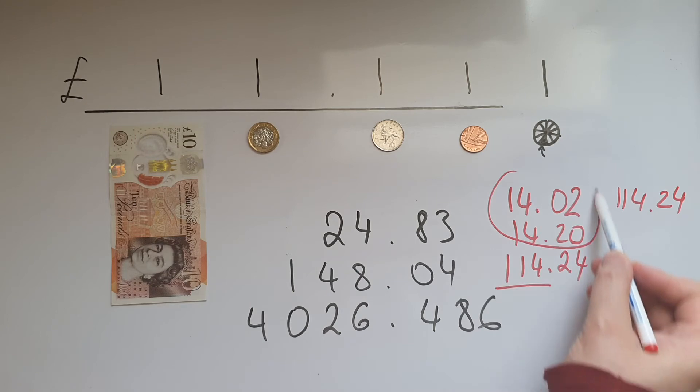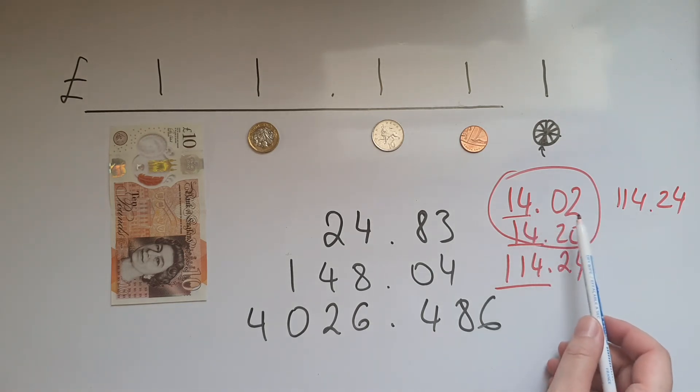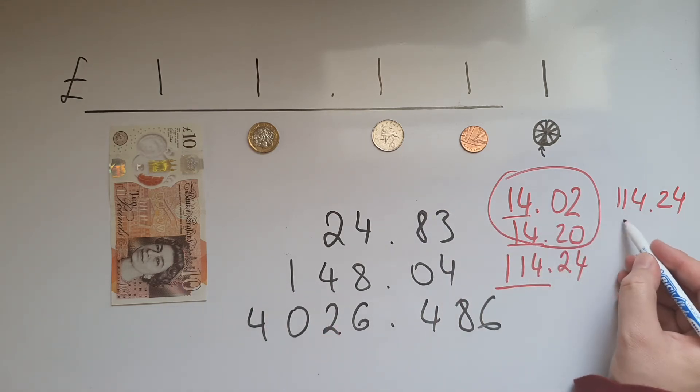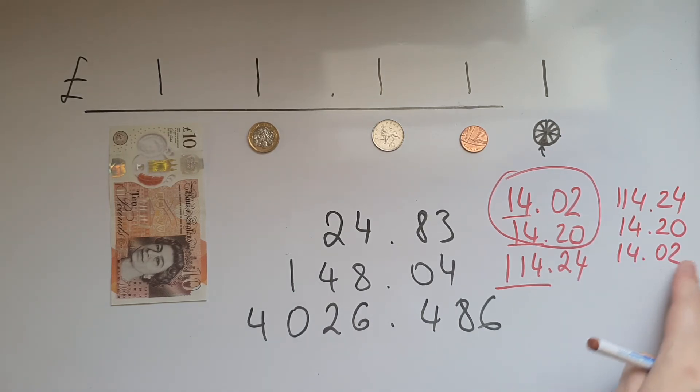Now comparing these two. The digits before the decimal point are exactly the same, but after the decimal point they are different. We've got 0.02 and then 0.20. So this would be 14 pounds and two pence, this would be 14 pounds and 20 pence. So the higher the digit that is right after the decimal point, the closer to the decimal point, the higher the value of the decimal. So what's going to come next is 14.20, and then 14.02. The order is really important.